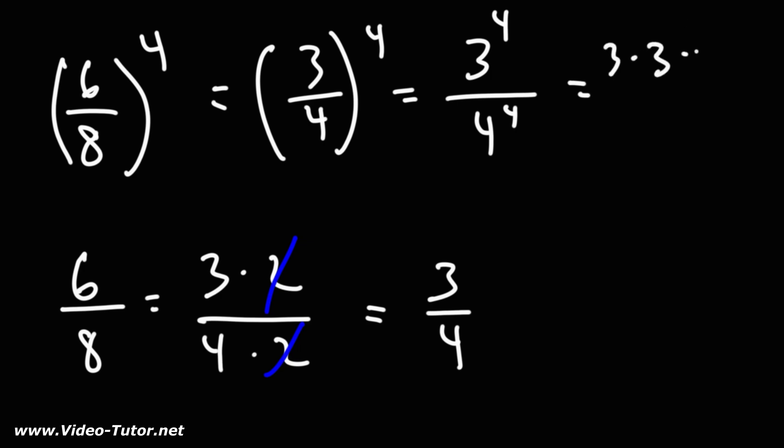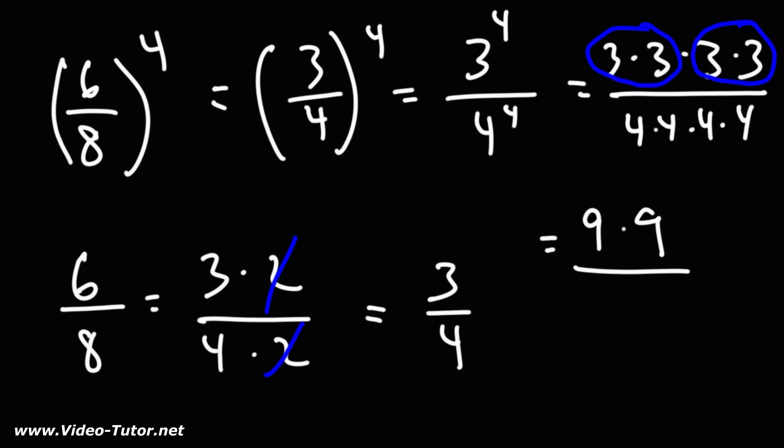3 to the fourth for multiplying 4 threes together. 4 to the fourth for multiplying 4 fours together. Each pair of threes is 9. So this is 9 and this is 9. So what we now have is 9 times 9 on top. On the bottom, each pair of 4 represents 16. So this is 16 times 16.